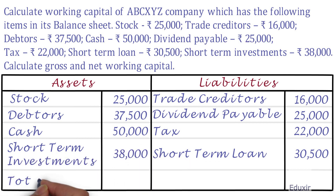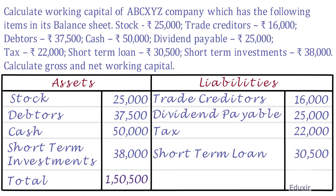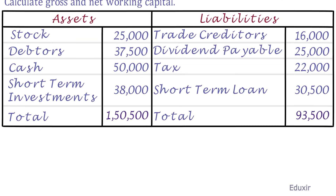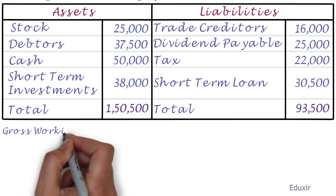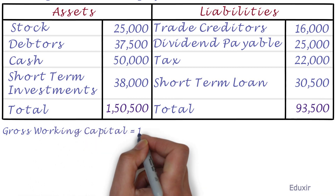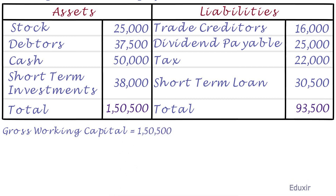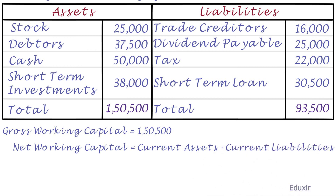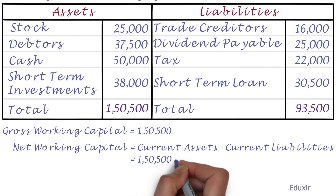Now let us total the assets, amounting to Rs. 1,50,500. Let us calculate the liabilities, amounting to Rs. 93,500. Now the gross working capital is the sum total of all the current assets of the business, which is equivalent to Rs. 1,50,500. Gross working capital is also known as current capital or circulating capital. The net working capital is the difference between current assets and current liabilities: 1,50,500 minus 93,500.